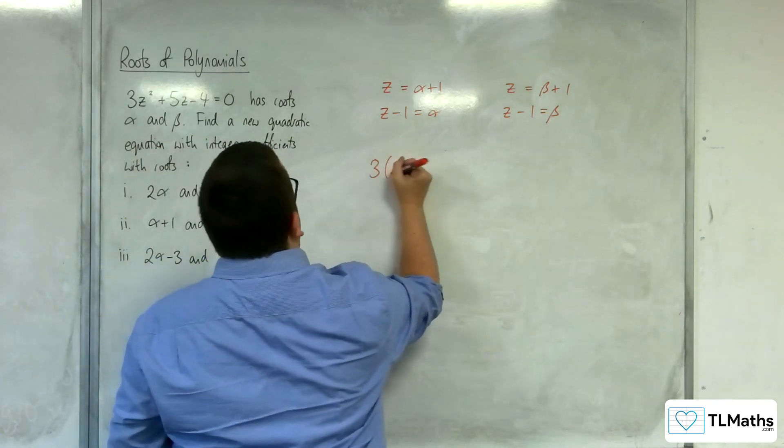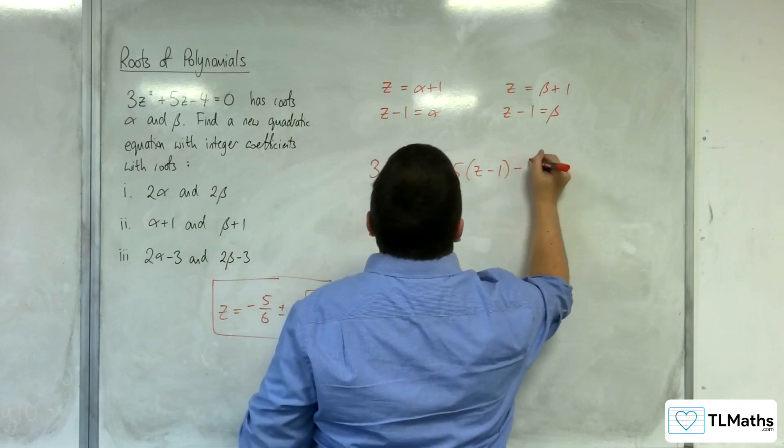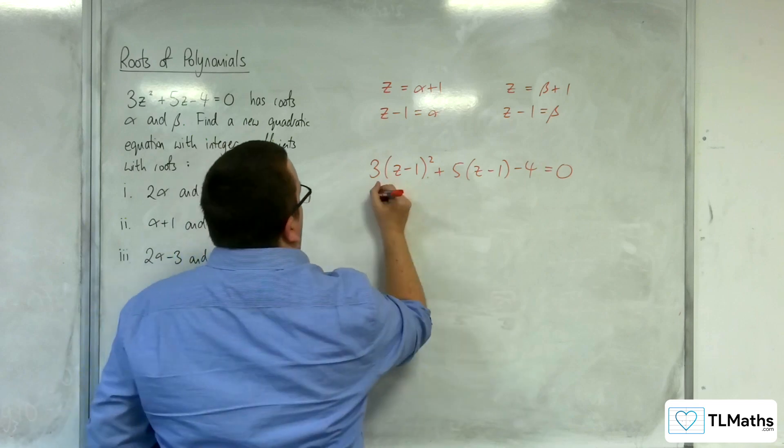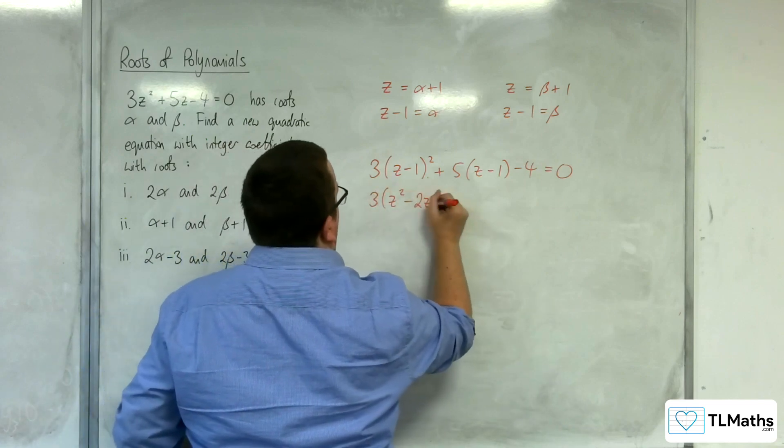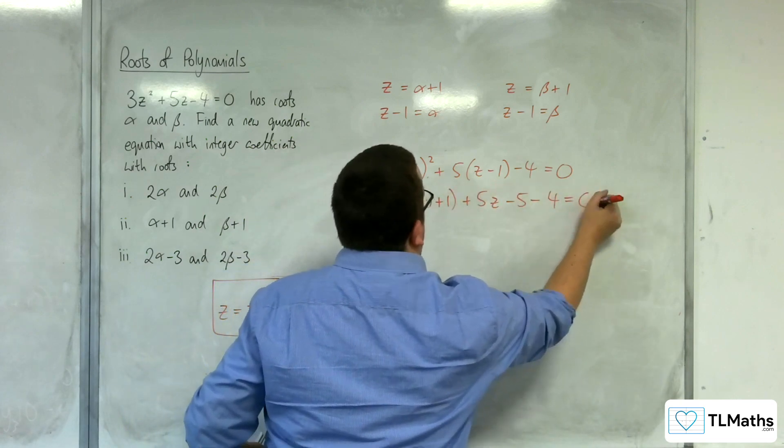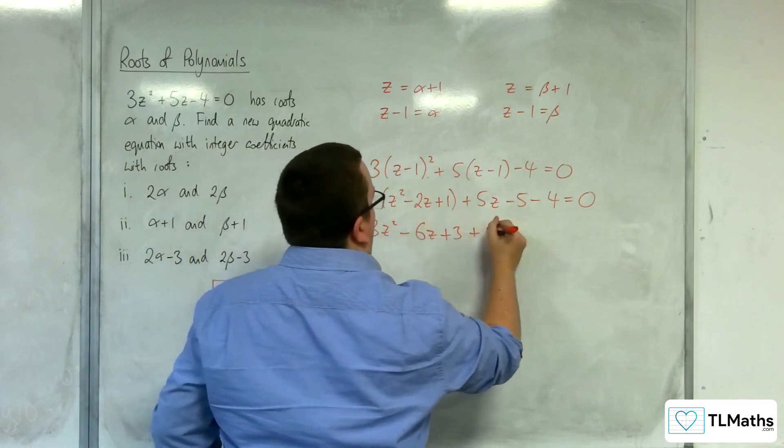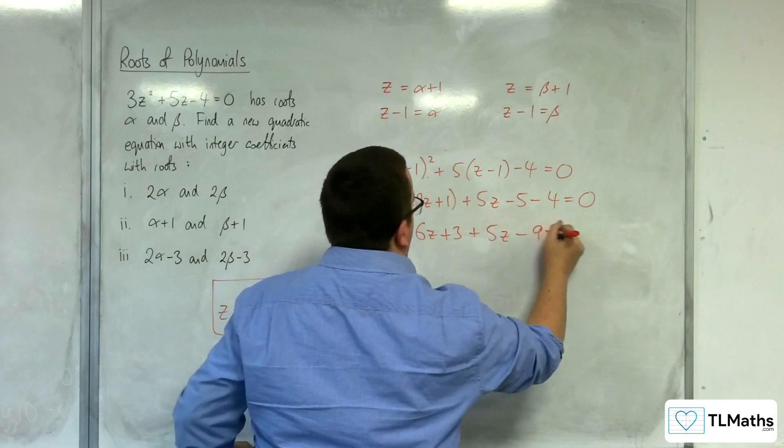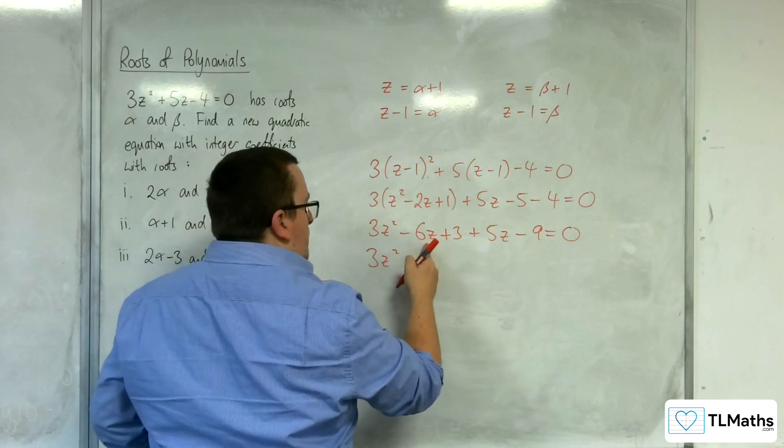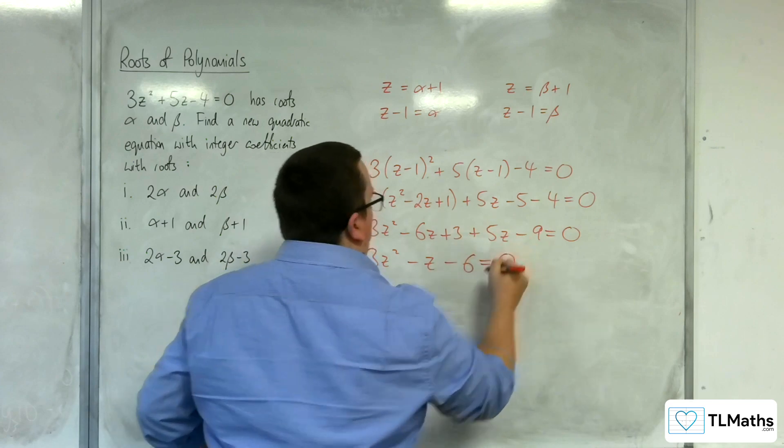So we get 3 lots of z minus 1 squared plus 5 lots of z minus 1, take away 4 equals 0. So we need to expand this out. So we've got 3 lots of z squared take away 2z plus 1, plus 5z minus 5 minus 4 equals 0. So 3z squared take away 6z plus 3, plus 5z take away 9 equals 0. So 3z squared, minus 6z plus 5z, so take away z, plus 3 take away 9, so minus 6 equals 0.